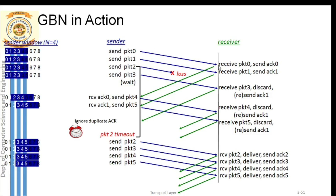Immediately after the receiver receives an individual packet, it sends an acknowledgement. After sending packet 0 and packet 1, the sender cannot slide the window because no acknowledgement has been received yet. Once all four packets are transmitted, no acknowledgements have been received. But once the acknowledgement for packet 0 — the oldest transmitted packet — arrives, the window slides by one position.